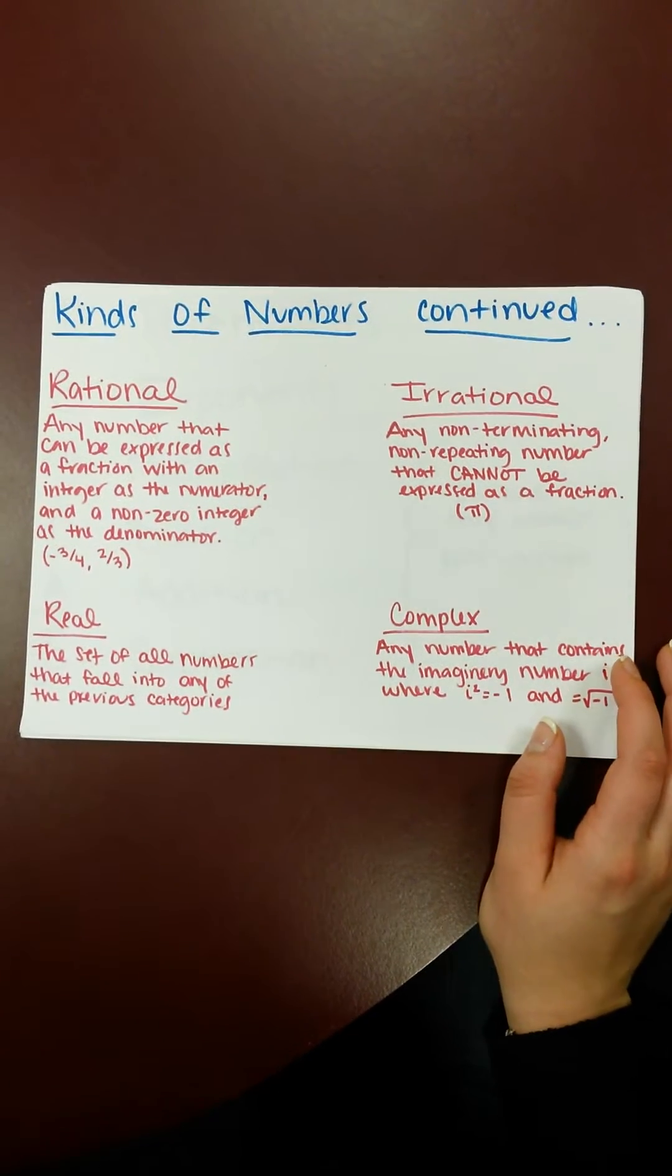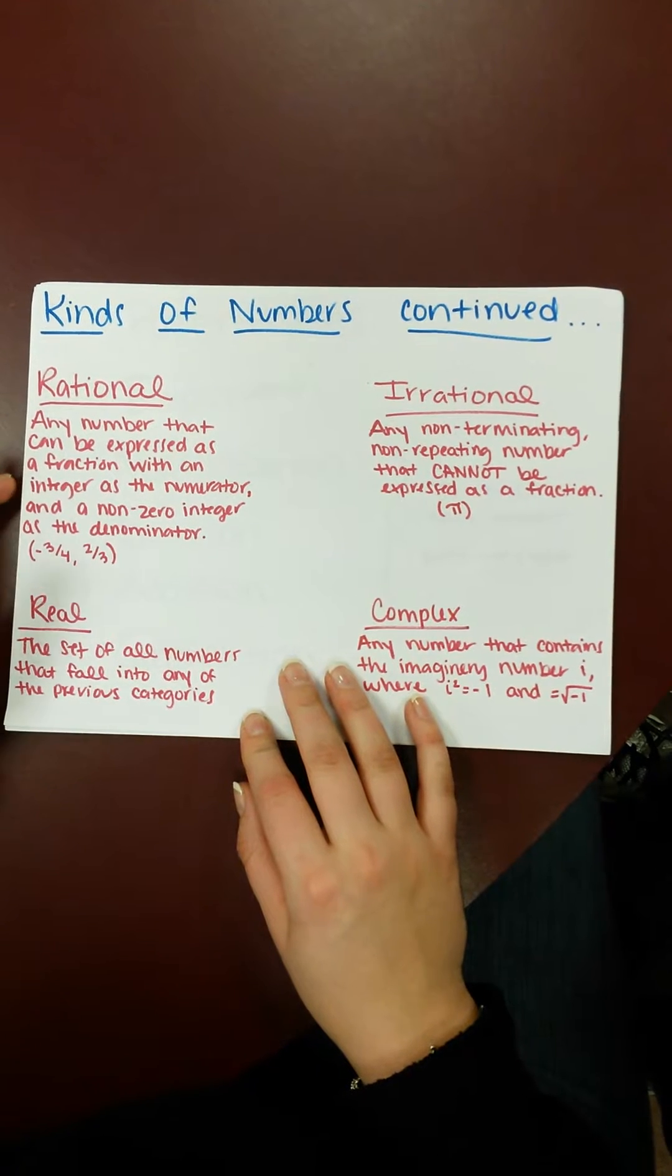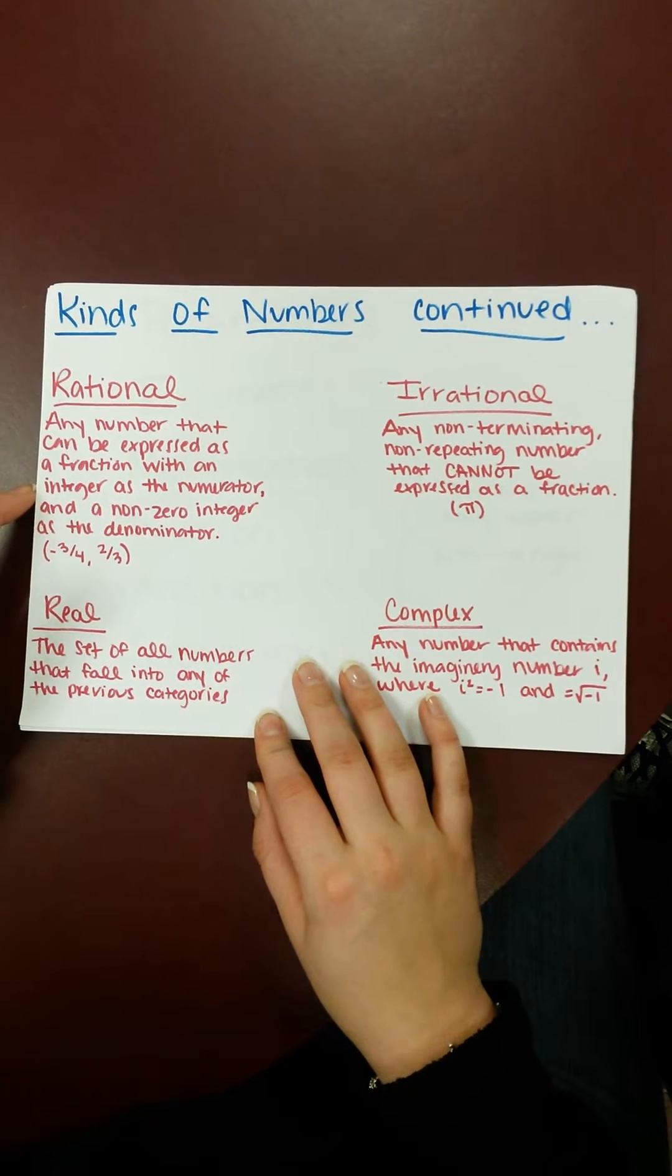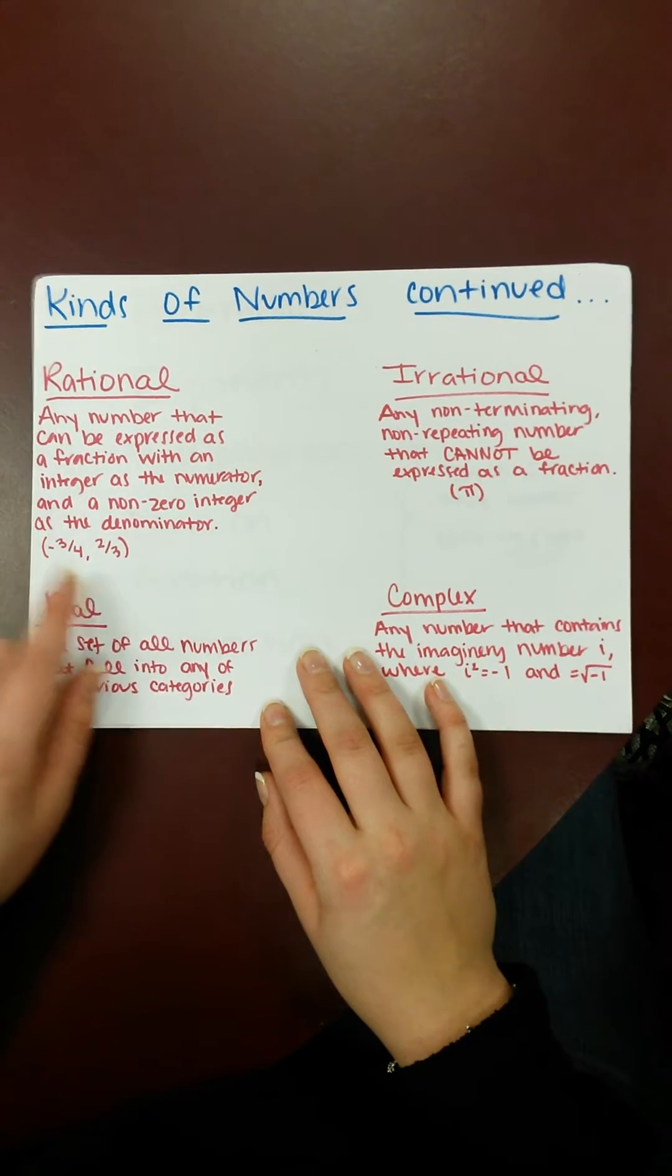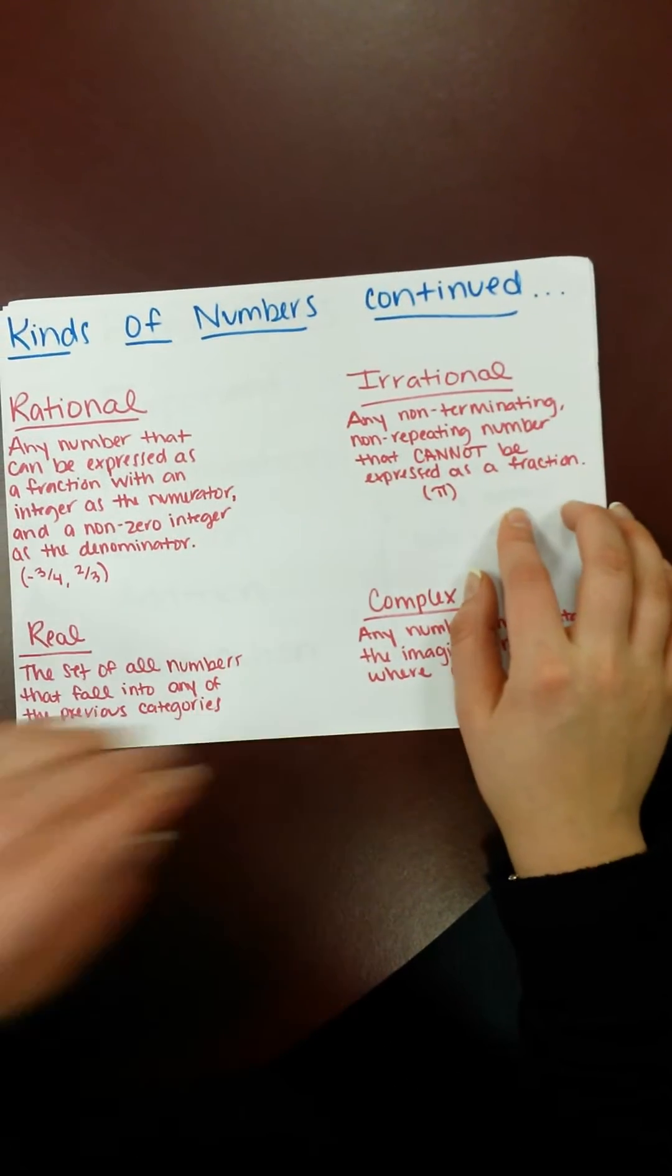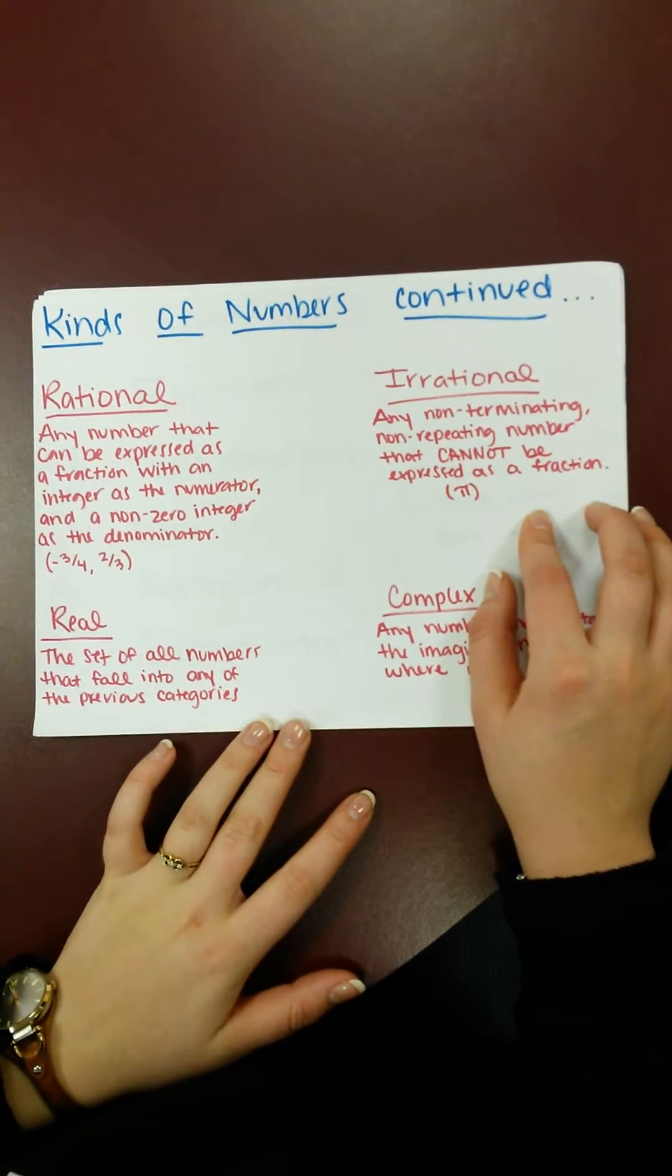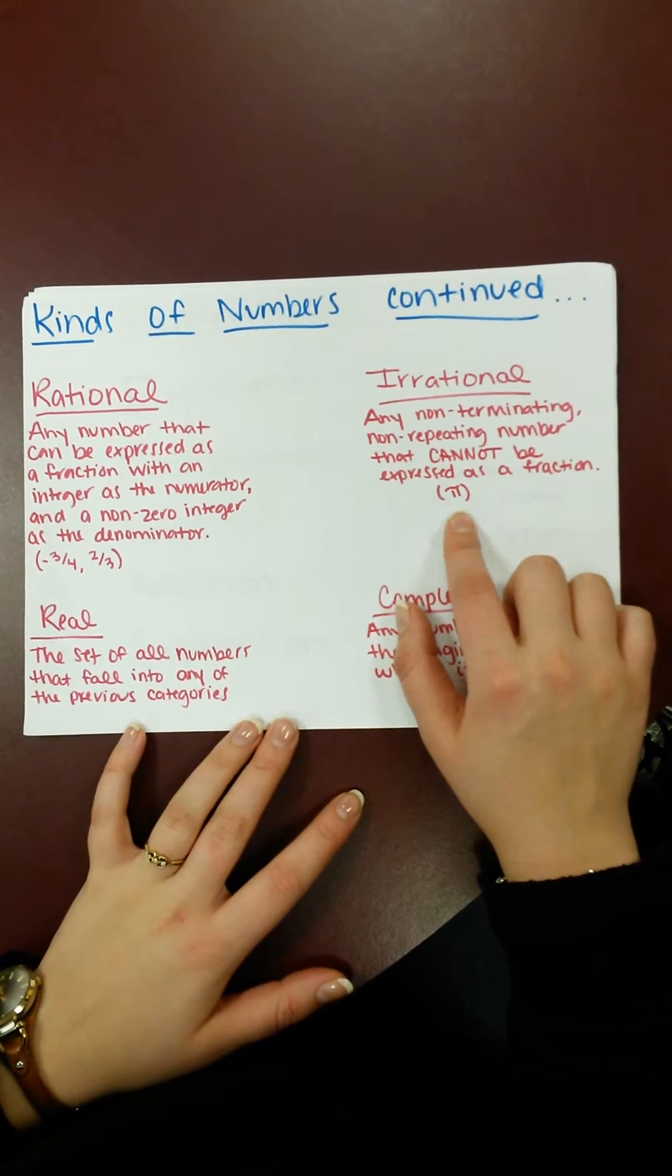And then to go on with the kinds of numbers, we'll talk about the rational, which is any number that can be expressed as a fraction with an integer as the numerator and a non-zero integer as the denominator. Next is irrational, and that's any non-terminating, non-repeating number that cannot be expressed as a fraction, so pi would be an example of that.